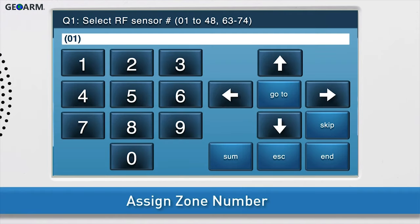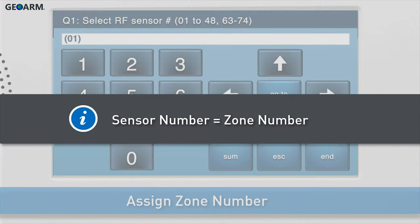First, you will choose the zone number for the Smoke Detection feature. Note, the words sensor and zone are interchangeable. In this training, we'll use the term zone number.